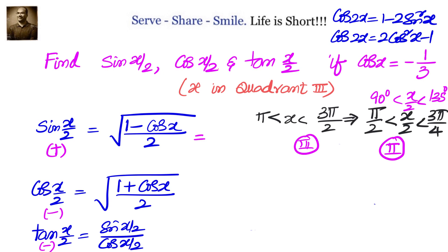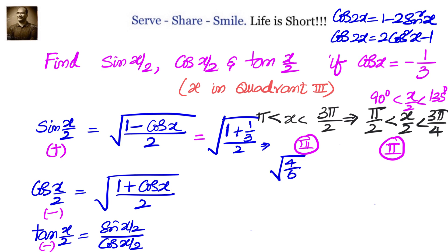Now let us substitute the values. For sin(x/2): square root of (1 - cos x)/2 = square root of (1 - (-1/3))/2 = square root of (1 + 1/3)/2 = square root of (4/6) = square root of (2/3) = √6/3, after multiplying numerator and denominator by √3.